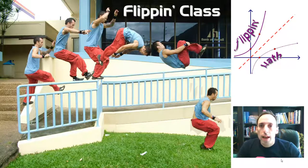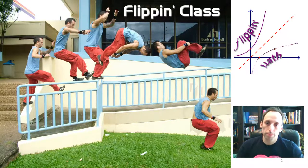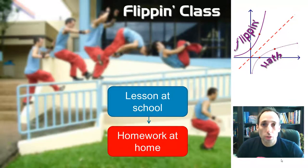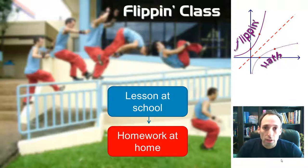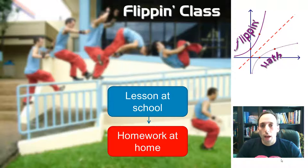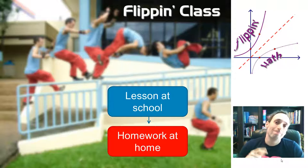So what exactly is a flipped class? Well, in a traditional class, you do your lesson at school, maybe through some sort of lecture, some sort of activity, and then you go home and you practice it with some homework. And whenever you're doing your homework, maybe you totally forgot all those things that you were supposed to learn in class. Or maybe you're just working on your homework and you don't know how to do it and there's nobody at home to help you. So what do you do? You probably just copied.